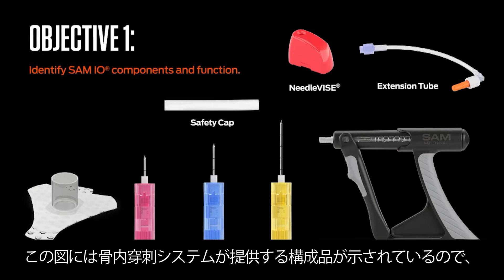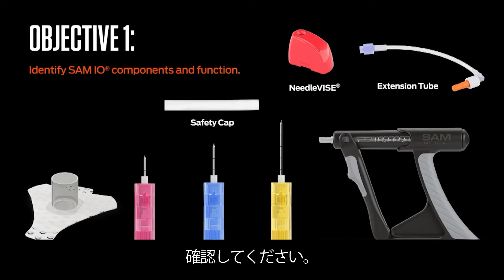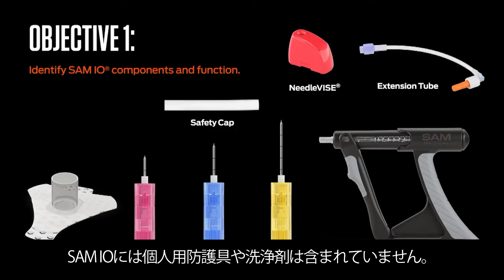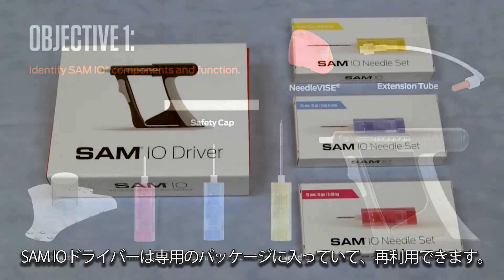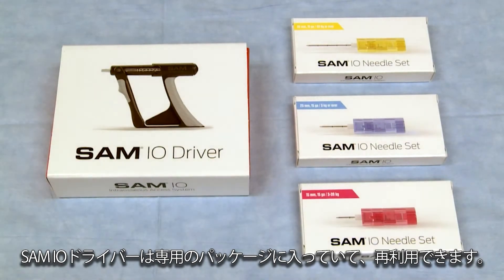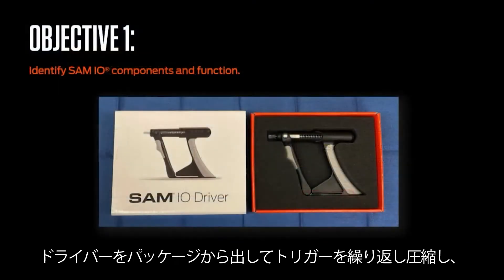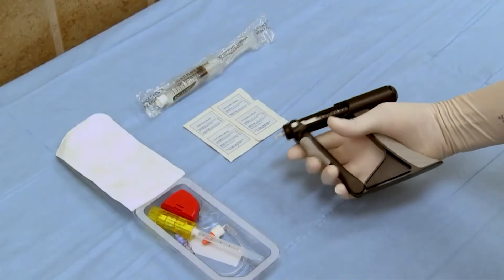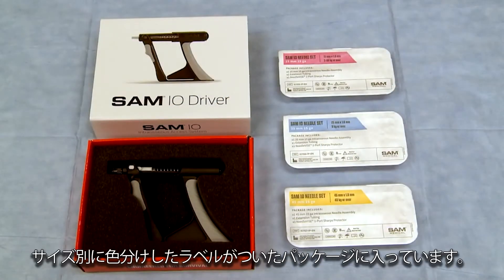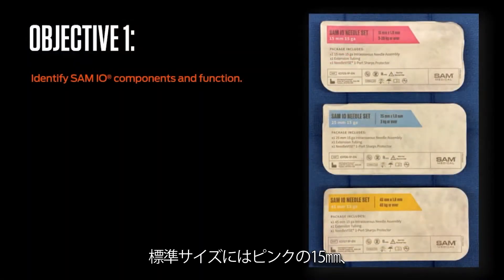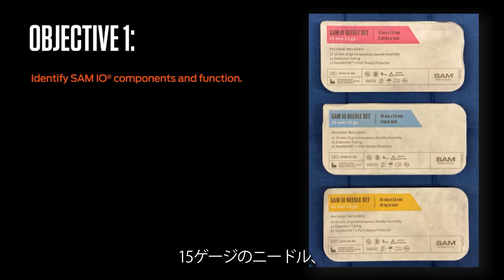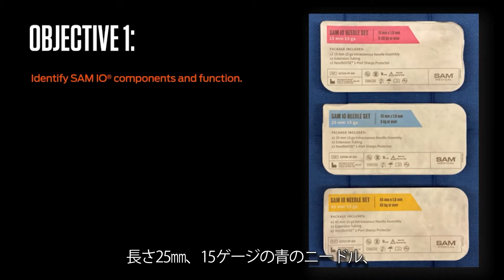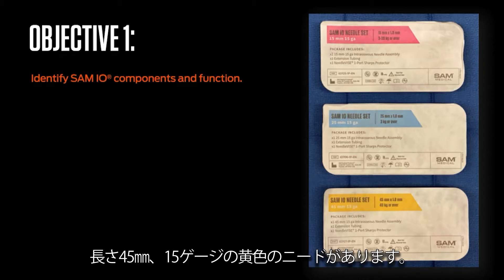Note the various components supplied by the IO access system are depicted in this illustration. No PPE or cleansing agent is supplied with the SAM-IO. The SAM-IO driver, which is reusable, can initially be found in its supplied packaging. Remove the driver from its packaging and repeatedly compress the driver's assembly to appreciate its unique function. SAM-IO needle assemblies are provided sterile in color-coded, size-specific, labeled packaging. Standard sizes include a pink 15 mm 15-gauge needle assembly, a blue 25 mm 15-gauge needle assembly, and a yellow 45 mm 15-gauge needle assembly.